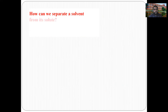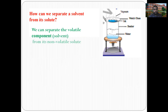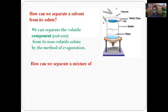How can we separate a solvent from its solute? If the solvent is volatile, we can separate the volatile solvent component from its non-volatile solute by the method of evaporation. Evaporation is the process of vaporization of a liquid below its boiling point.